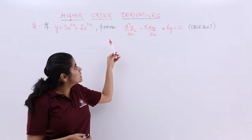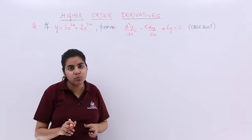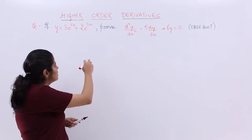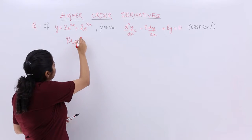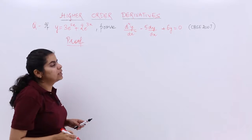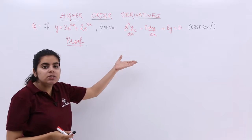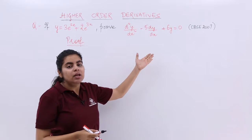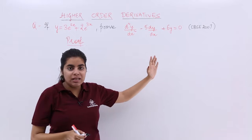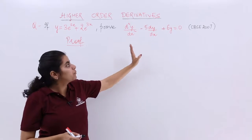Since it's a proof question, we write the heading as proof. Don't panic with the length of the solution and the question. You just see what all is needed.